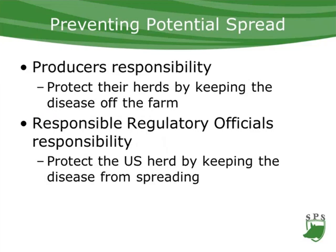Biosecurity on a site is under the control of the producer. Every day producers make decisions on what measures to implement to keep out diseases like PRRS, PED, and mycoplasma. That doesn't change during an outbreak — producers still need to take measures to protect their herd. What does change in an outbreak is that regulatory officials — local, state, federal, and tribal — will also be making decisions to protect the U.S. herd and keep the disease from spreading, including issuing movement permits for sites in the control area with no evidence of infection.